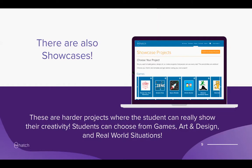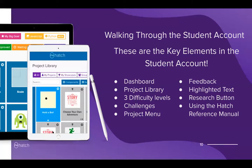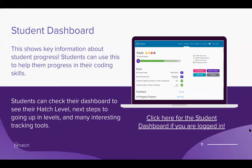The key elements in the student account include the dashboard, where students can see their Hatch levels, the project library with all possible activities and projects, each with a different difficulty level, and challenges. There's also feedback from a real coach, highlighted text that provides instant explanations from the research manual, and a research button for self-directed research using Hatch-sourced reference materials. The student dashboard is where you see your progress, project points, challenge points, and the component level needed to advance.